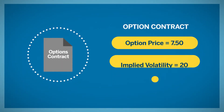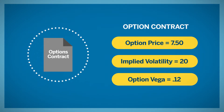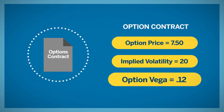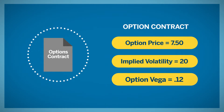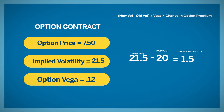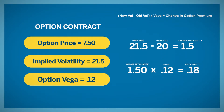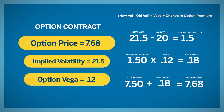For example, let's assume the value of an option is 7.50. Implied volatility is at 20 and the option has a Vega of 0.12. Let's assume that implied volatility moves from 20 to 21.5 — a 1.5 vol increase. The option price will increase by 1.5 times 0.12, equaling 0.18, bringing it to 7.68.